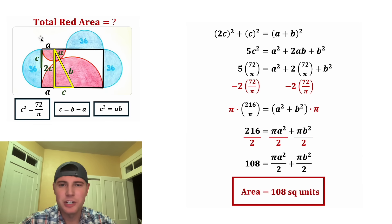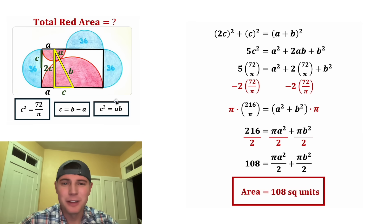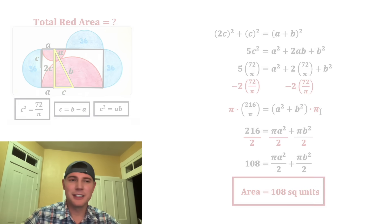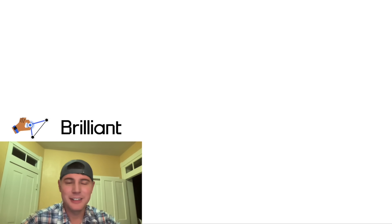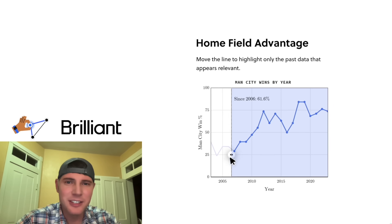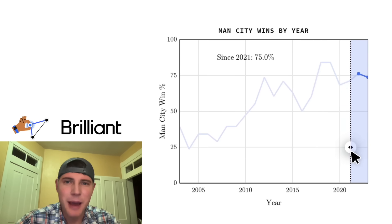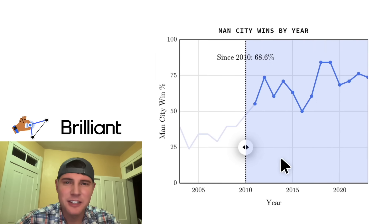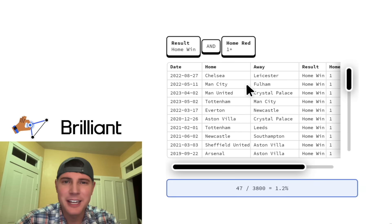And πa²/2 + πb²/2 is exactly what we were trying to solve for — the area of our two red semicircles. So the total red area is equal to 108 square units. I really like this problem — I think it was brilliant!